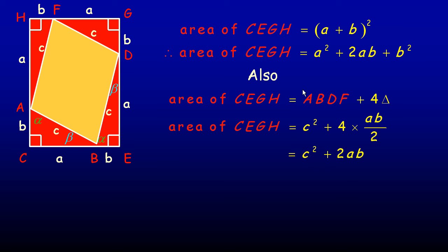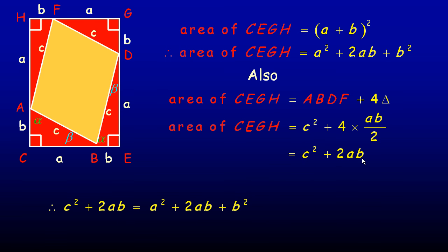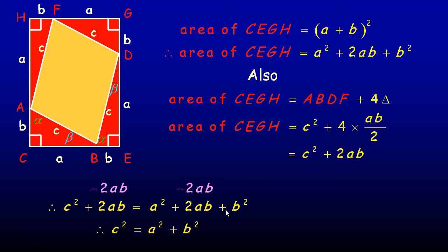Now we've calculated the area of the same big square two ways. So A squared plus 2AB plus B squared must equal C squared plus 2AB. Since both sides share the common term 2AB, we subtract 2AB from both sides — those cancel — and we're left with A squared plus B squared equals C squared. And that's a proof of the Pythagorean Theorem using a square. That's the end of the tutorial.